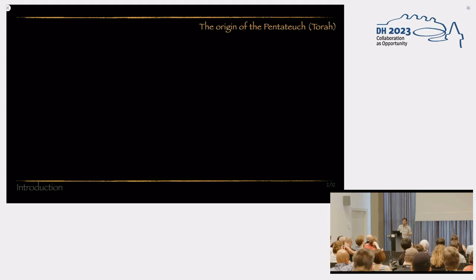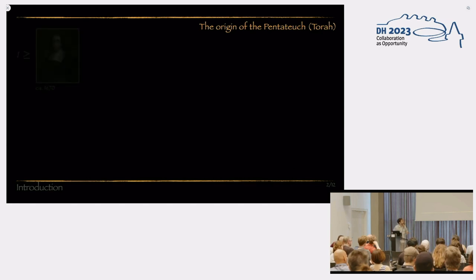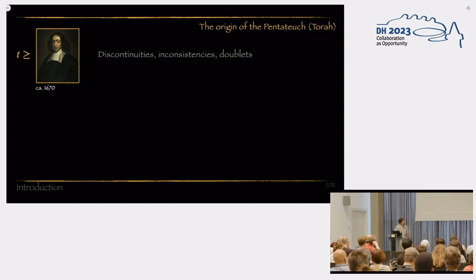And the question is, why would we even want to consider these two options to begin with, when the text so solidly advocates for the first option? And for that, I have to take you to the late 17th century, where one Baruch Spinoza, a Jewish philosopher, started examining the Bible in an objective and critical manner, and then he found numerous discontinuities in the text, inconsistencies, and doublets.